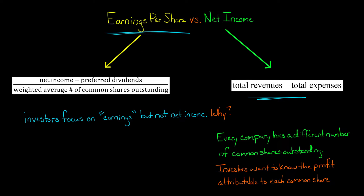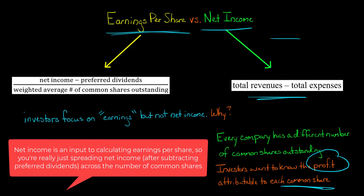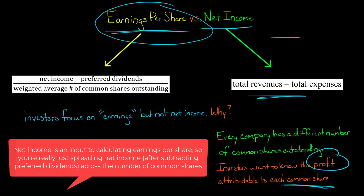The answer is that every company has a different number of common shares outstanding. Thus, it's not all that helpful to compare the net income of one company to the net income of another company. Investors want to know the profit attributable to each common share of stock. For example, if you own one common share of a company, what is your share of that company's net income? And that's what earnings per share represents.